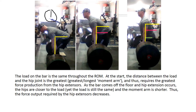Comparing the moment arm from position one to position two, you can see it's clearly shorter — so the load on the bar is the same but significantly less work is required by the hip extensors. In position three, near full lockout, the hips are even closer to the bar, giving an even shorter moment arm and requiring even less muscle force. Again, the load stayed the same but the amount of work required by the muscles varied based on how close the hip joint was to the bar.